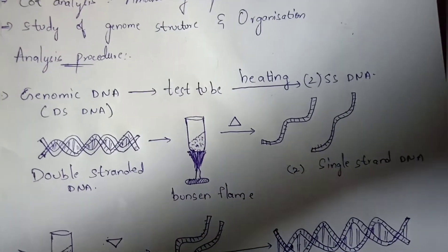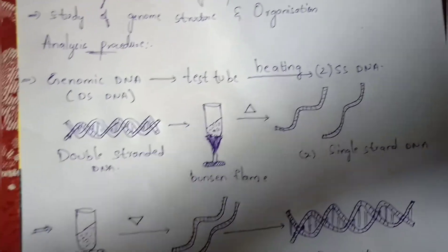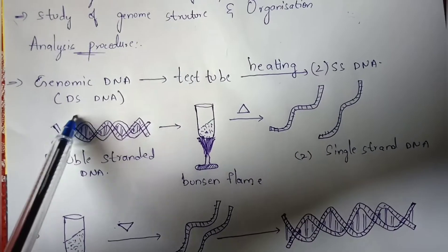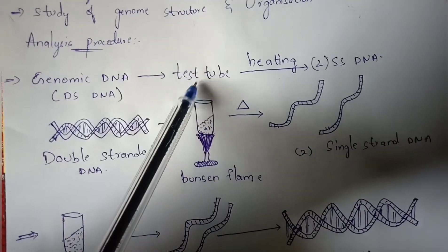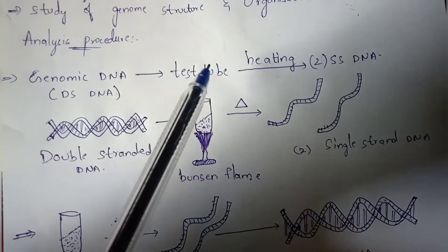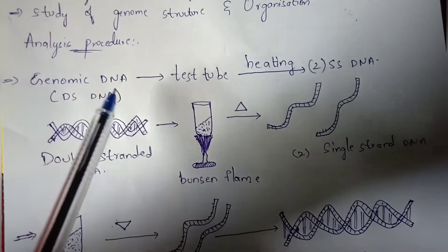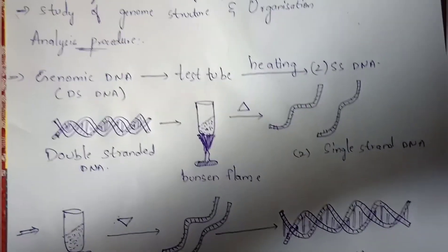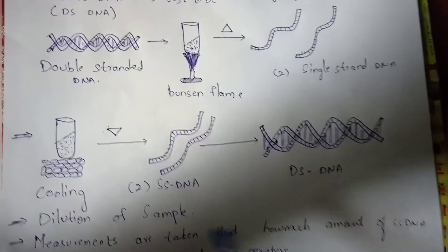The whole process takes place inside the test tube itself. The genomic DNA, which is double-stranded, gets inserted into the test tube, the test tube is heated within the Bunsen flame, and the double-stranded DNA gets converted into single-stranded DNA. This is the first point.